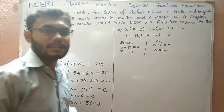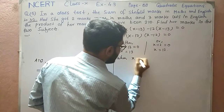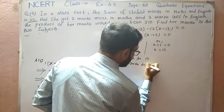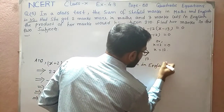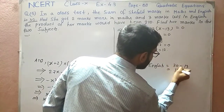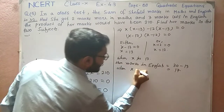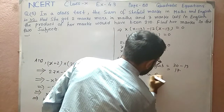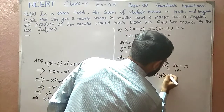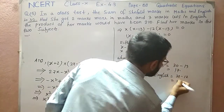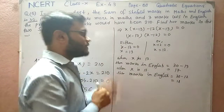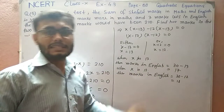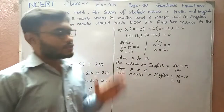We now find the English marks for each case. When x is 13, marks in English = 30 minus 13 = 17. When x is 12, marks in English = 30 minus 12 = 18. So: if she got 13 marks in Maths then she got 17 in English, and if she got 12 marks in Maths then she got 18 marks in English. These are the two answers.